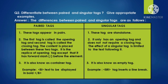The differences between paired and singular tags are as follows. Point 1: Pair tags appear in pairs, but singular tags are stand-alone. Point 2: In paired tags, the first tag is called the opening tag and the second tag is called the closing tag. The content is placed between these two tags. It is the replica of the opening tag, except that it has a forward slash before the element.